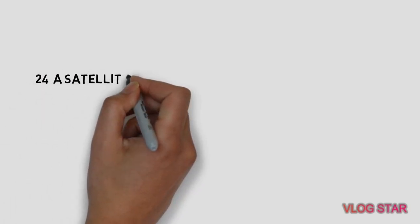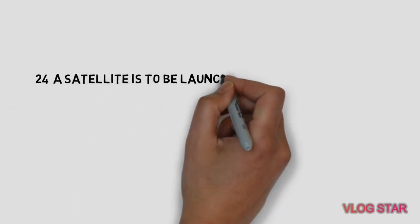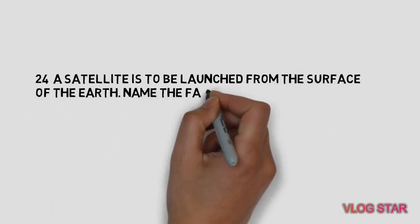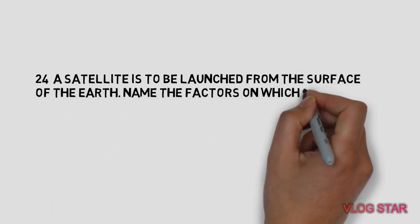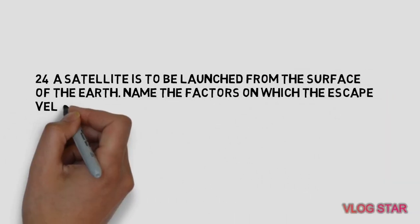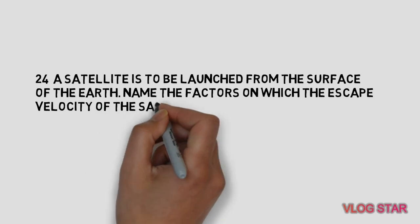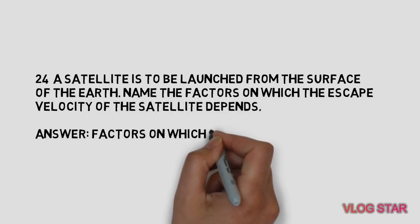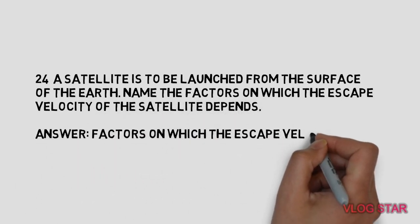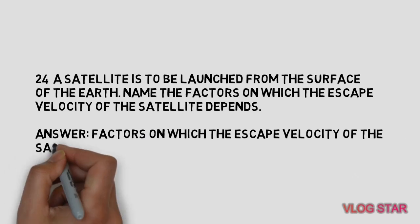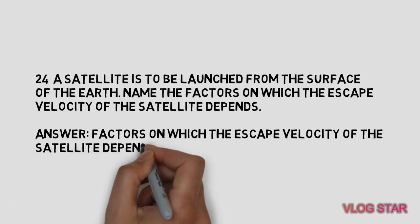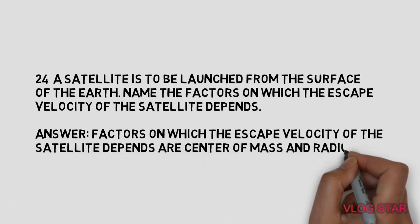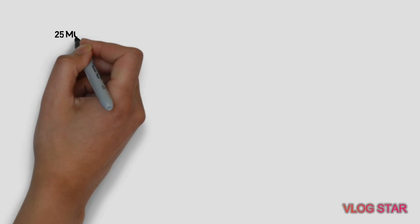A satellite is to be launched from the surface of the Earth. Name the factors on which the escape velocity of the satellite depends. The factors on which escape velocity depends are the center of mass and the radius of the Earth.